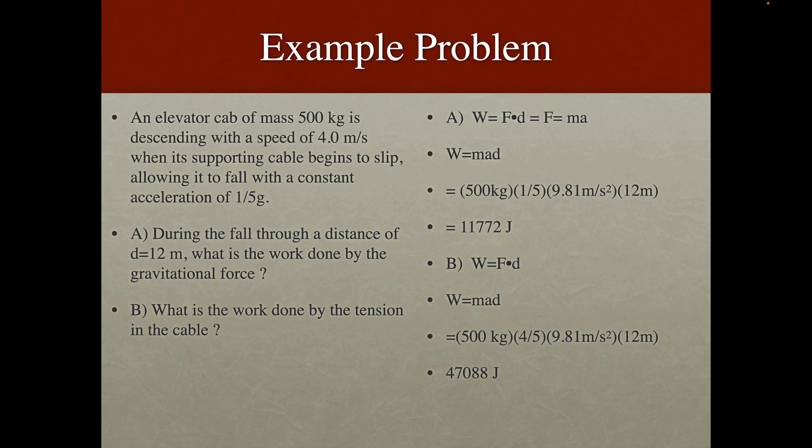So work equals force times displacement. In this case, force equals MA, so we can say that W equals MAD, and we can put in here for A one-fifth of G. So we just go one-fifth times 9.81 meters per second squared, and then multiply by a displacement of 12 meters and a mass of 500 kilograms, and we'll get 11,772 joules.